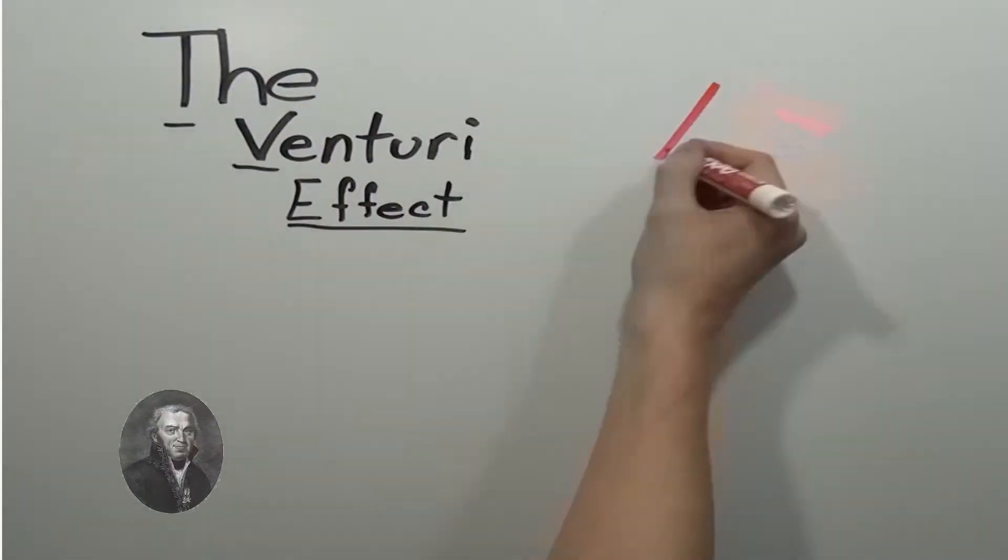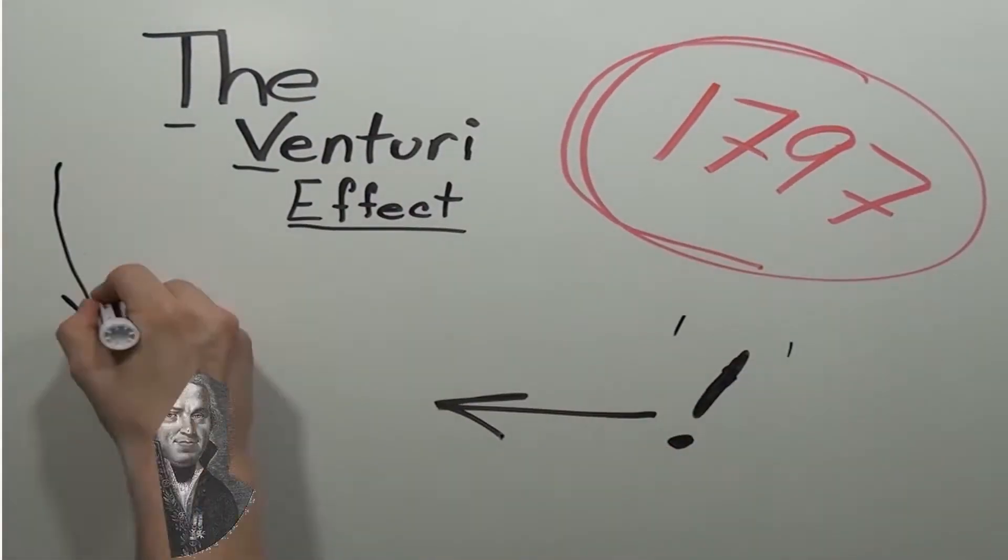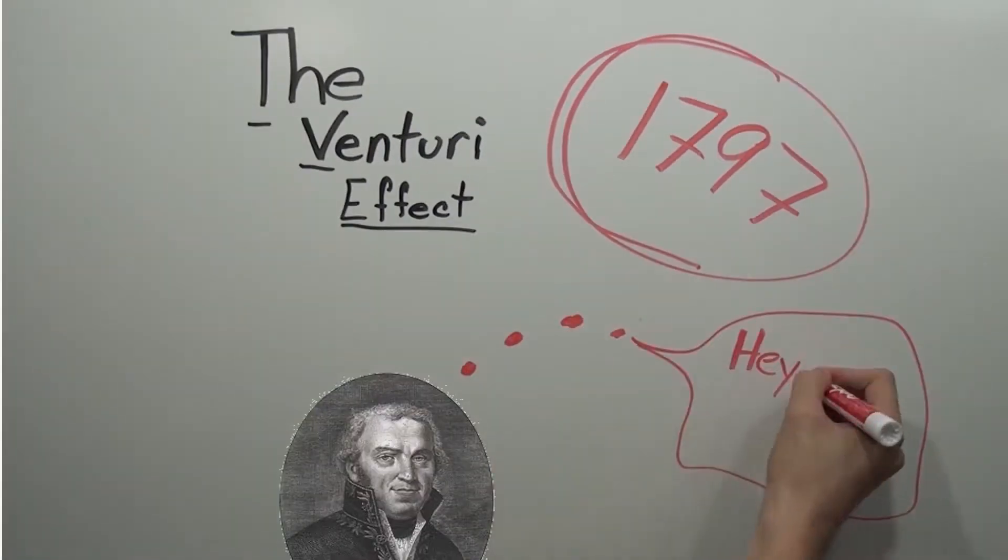The aim of the game today is the Venturi Effect. The Venturi Effect was discovered by Giovanni Battista Venturi, an Italian physicist in 1797.